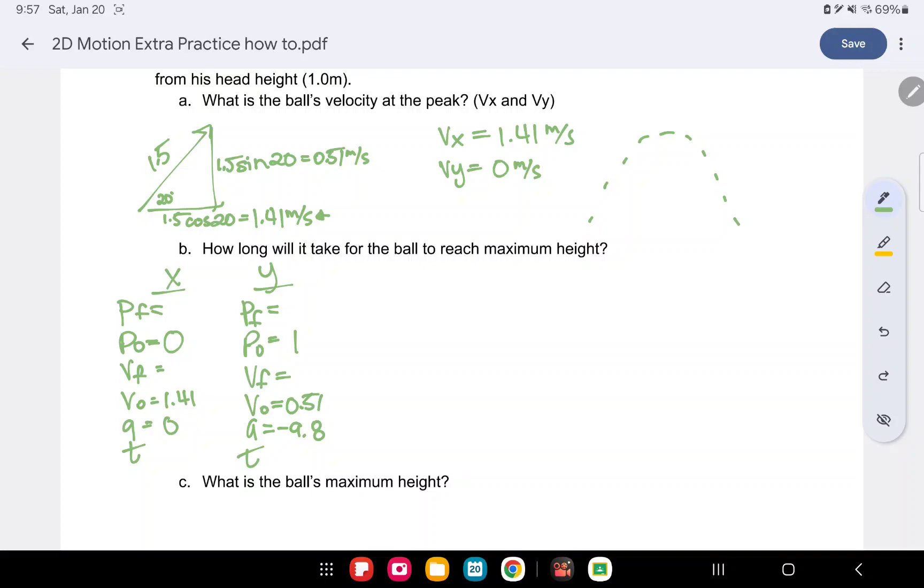So at maximum height, we know it'll be a velocity that's of 0. So how long will it take? Let's use our VF equation because we have all of the equipment to solve that one. Our VF at height, at the maximum height, the VF will be 0.